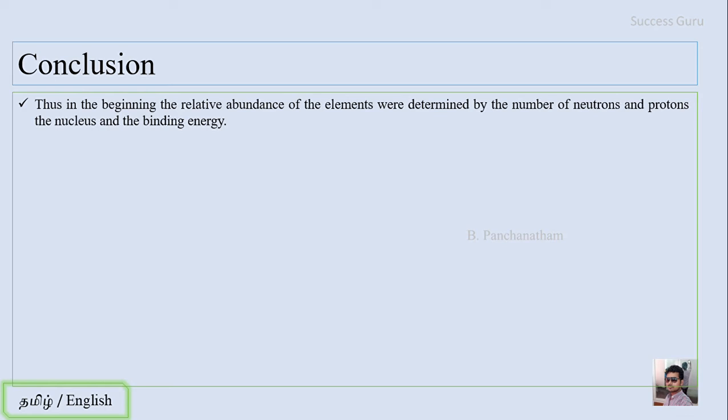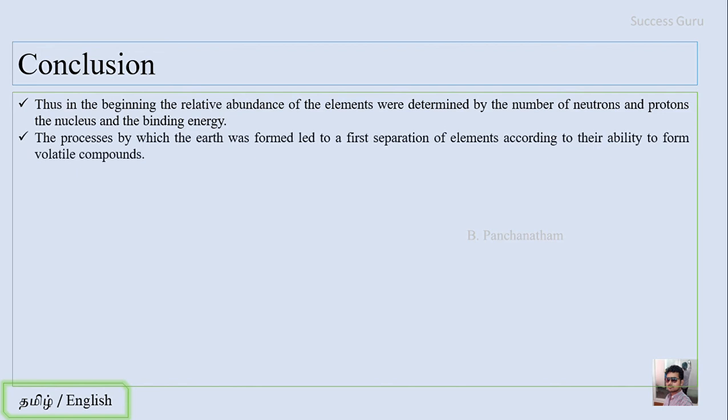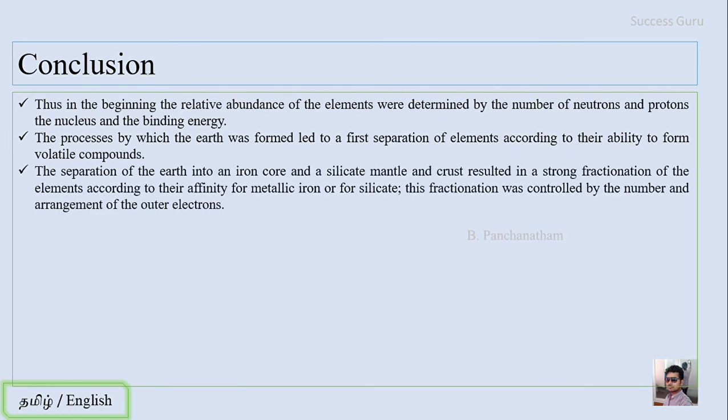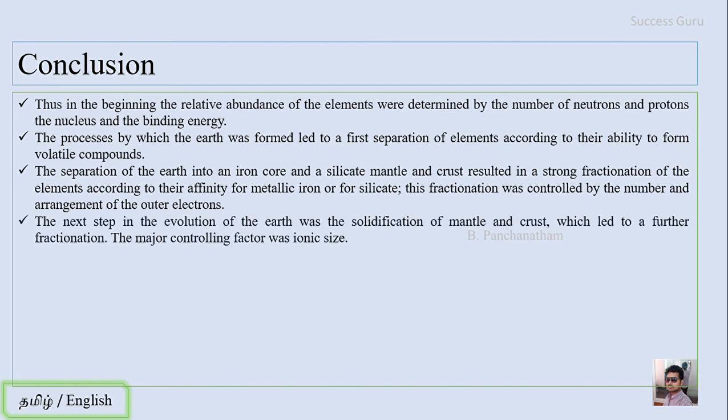Thus, in the beginning, the relative abundance of elements were determined by the number of neutrons and protons in the nucleus and the binding energy. This is what we discussed in the very first lecture. Then, the process by which the earth was formed led to first separation of elements according to their ability to form volatile compounds. The separation of the earth into an iron core and a silicate mantle and crust resulted in strong fractionation of the elements according to their affinity for metallic iron or for silicates. This fractionation was controlled by the number and arrangement of outer electrons. The next step in the evolution of the earth was the solidification of mantle and crust which led to further fractionation and the major controlling factor was the ionic size.